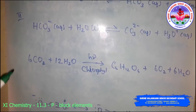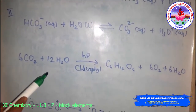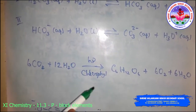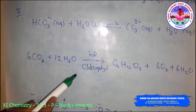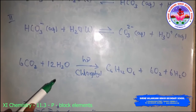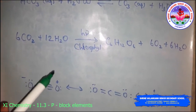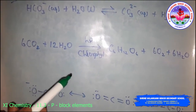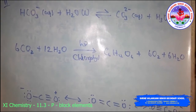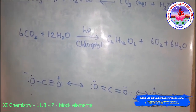Photosynthesis is the process by which green plants convert atmospheric carbon dioxide into carbohydrates such as glucose. Carbon dioxide reacts with water in a photochemical reaction in the presence of chlorophyll to produce glucose. By this process, plants make food for themselves as well as for animals and human beings. Unlike carbon monoxide, it is not poisonous, but increased combustion of fossil fuels and decomposition of limestone for cement manufacture have increased the carbon dioxide content of the atmosphere. This may lead to an increase in the greenhouse effect, raising the temperature of the atmosphere with potentially serious consequences. Carbon dioxide can also be obtained in solid form called dry ice.